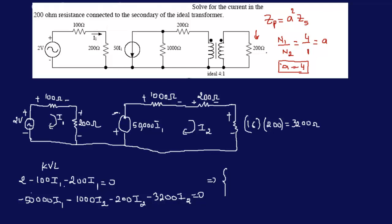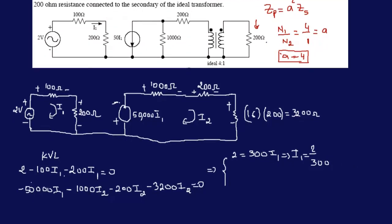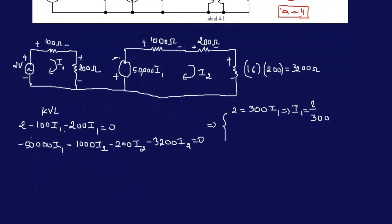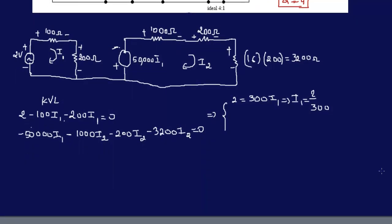Again, we're not concerned with I1 at all. Okay. So, we have 2 is equal to 300 I1. As such, I1 is equal to 2 over 300.